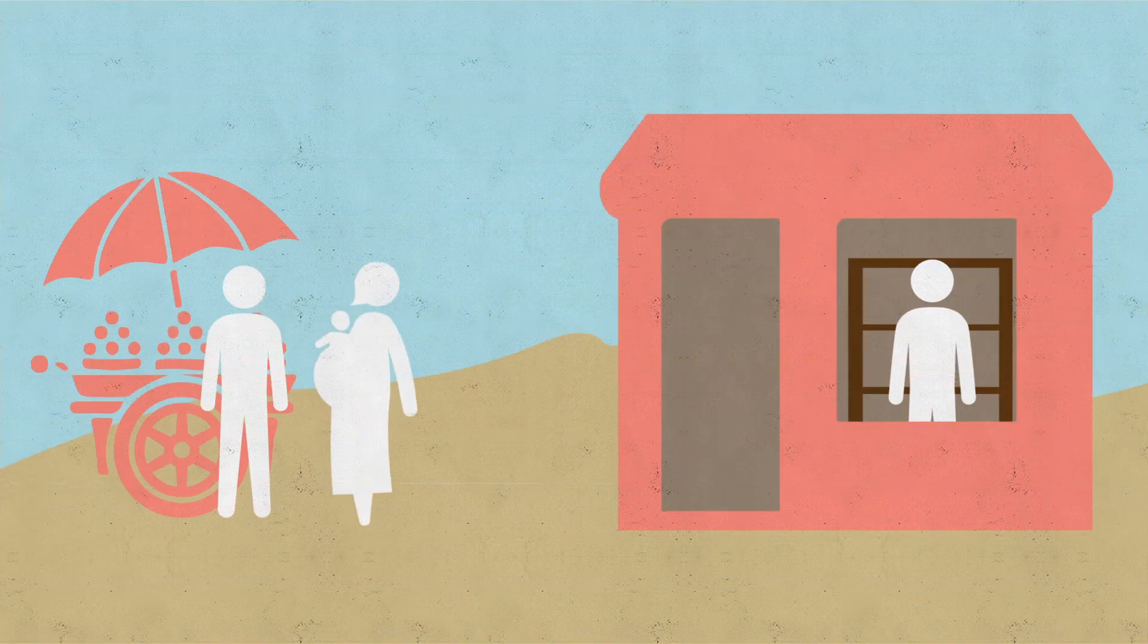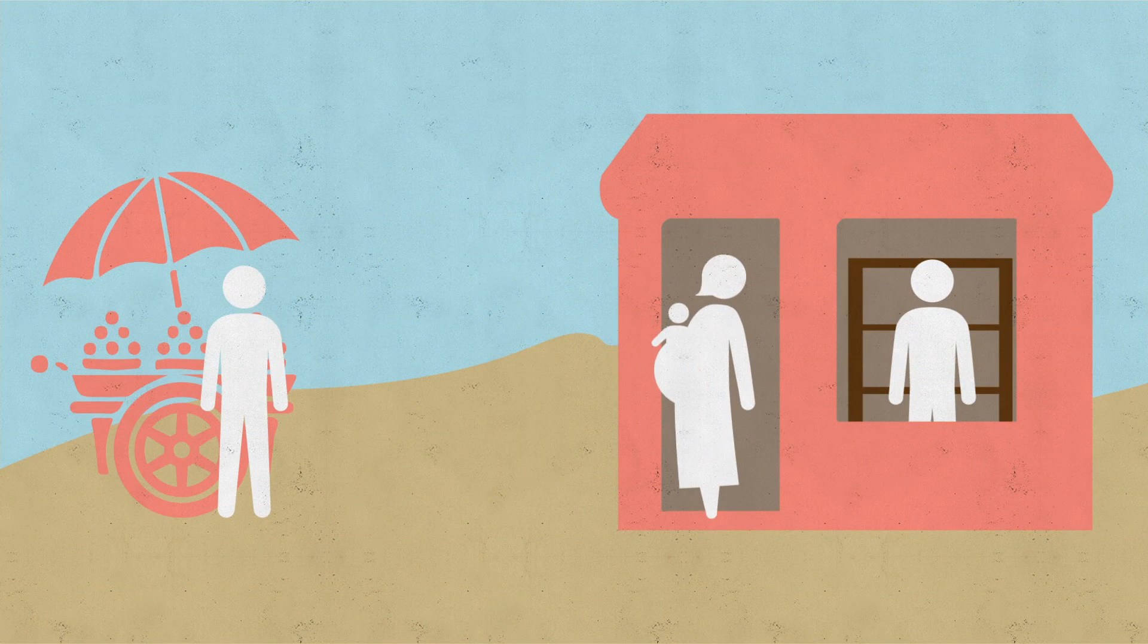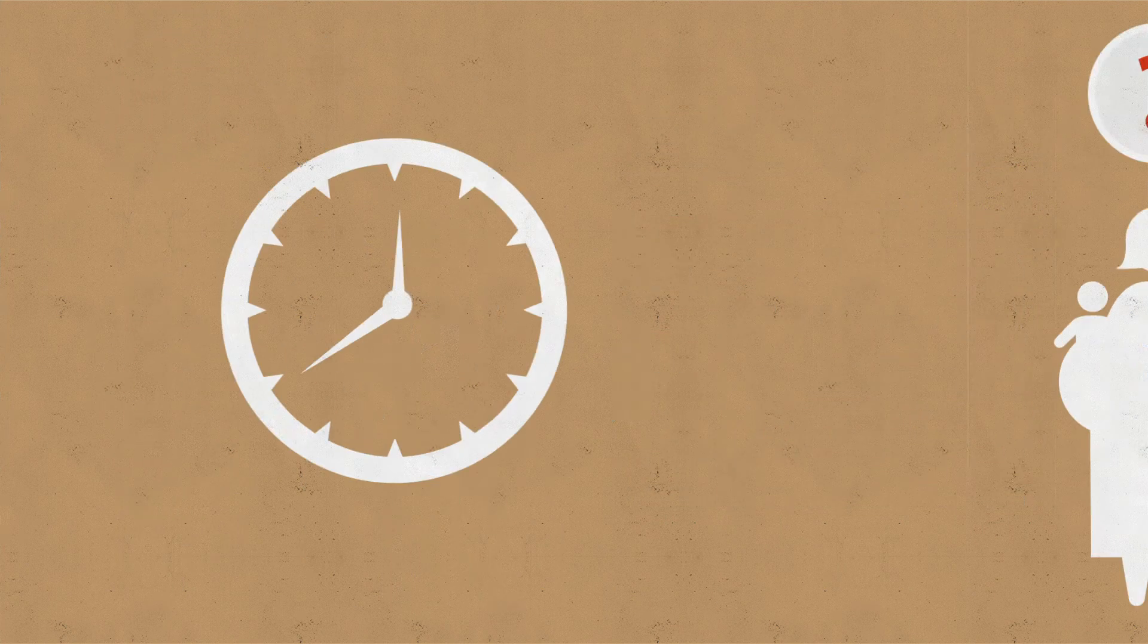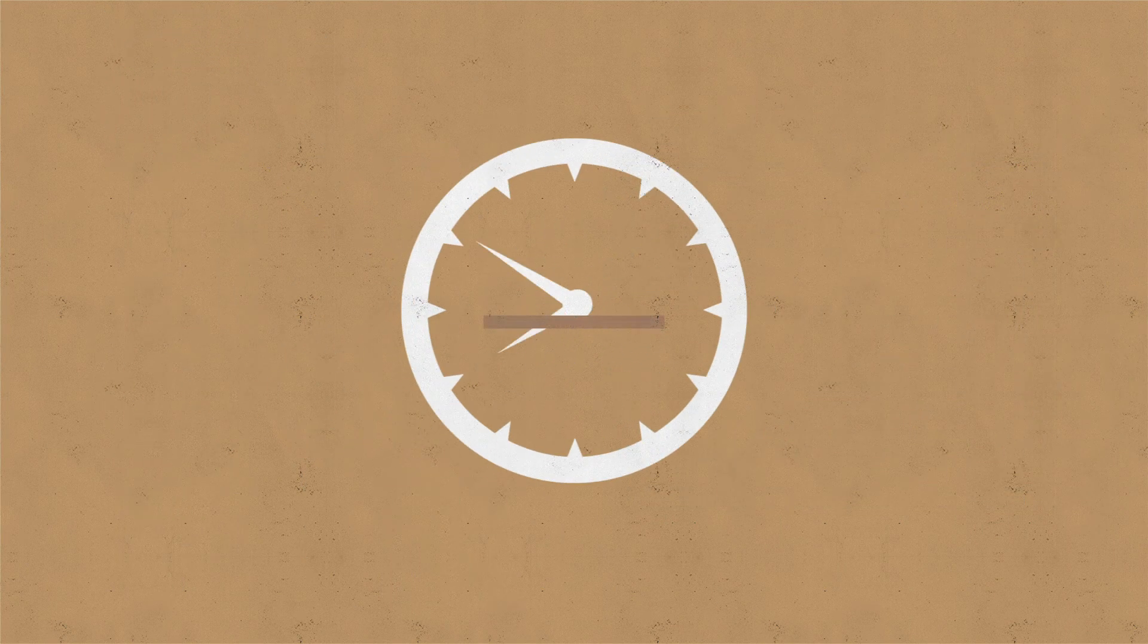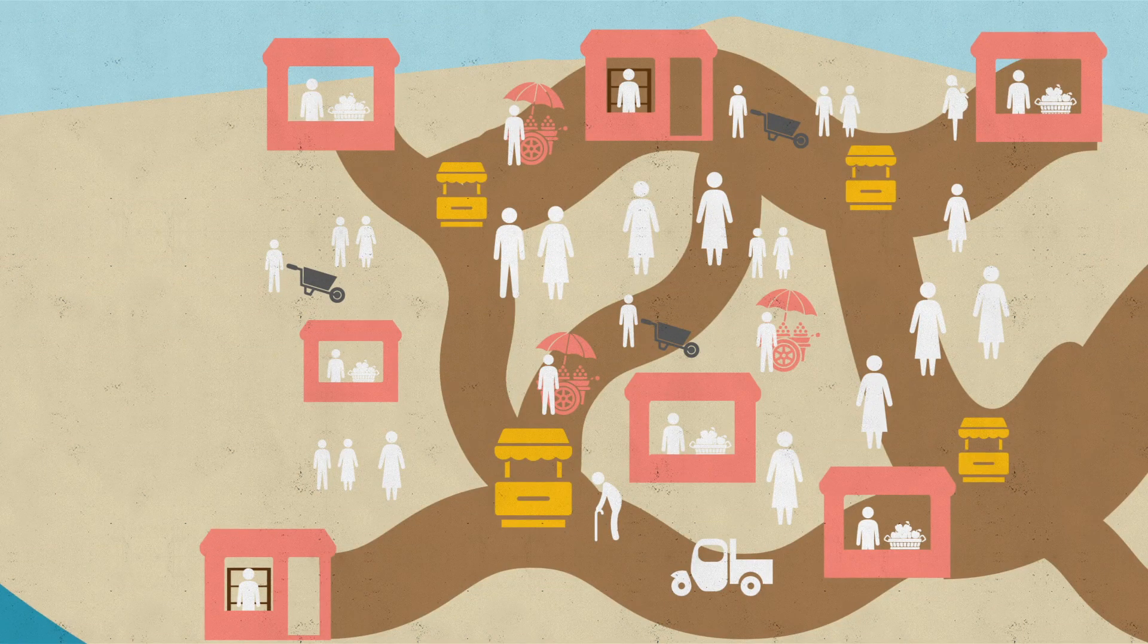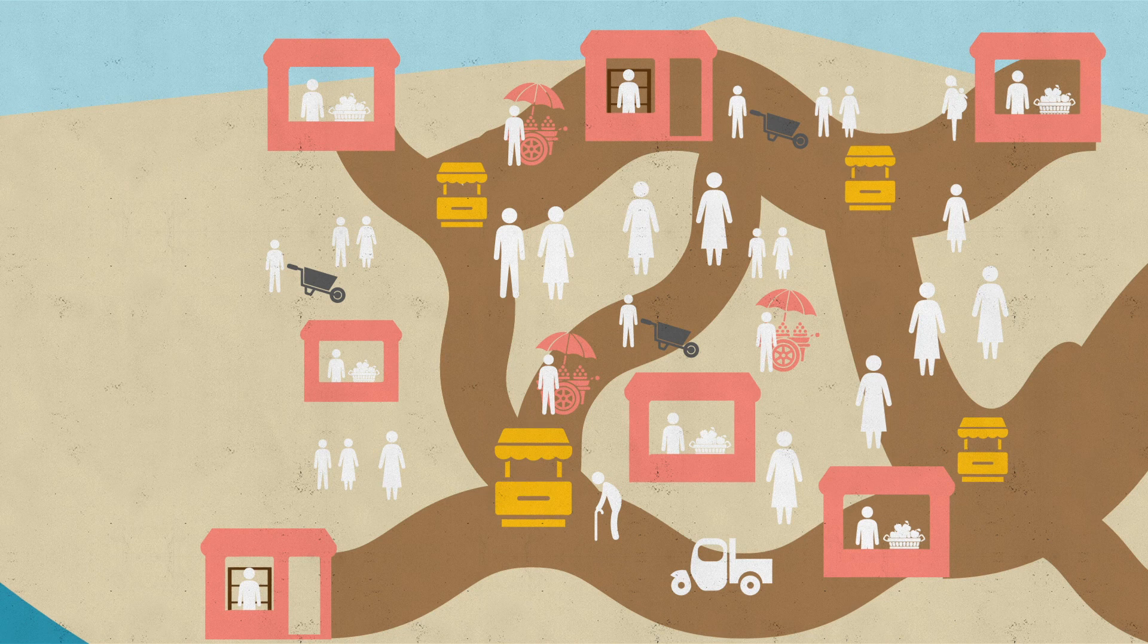But what happens when we give a beneficiary cash without understanding the market? What if they go to their local trader only to find there are no goods on the shelves? Let's roll back the clock a little. Let's say the beneficiary and the small trader are in a slum on the outskirts of the city. The trader gets their goods from different places.